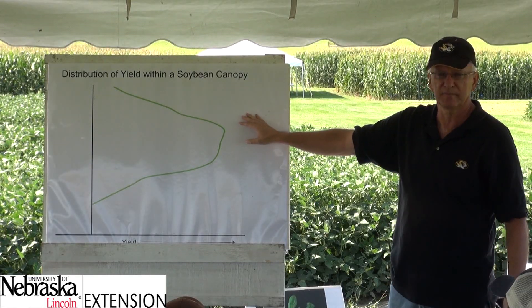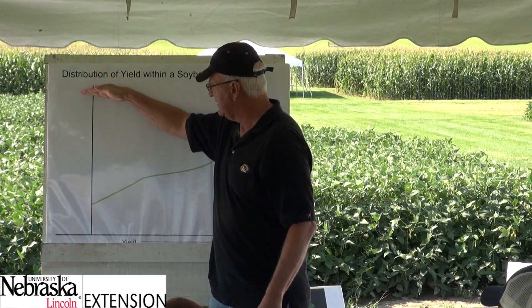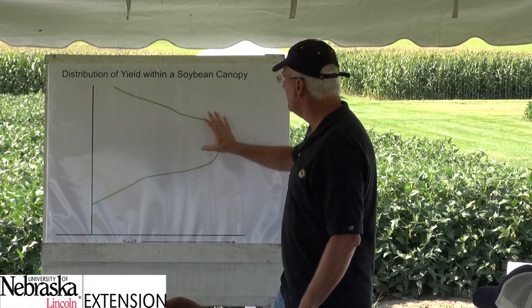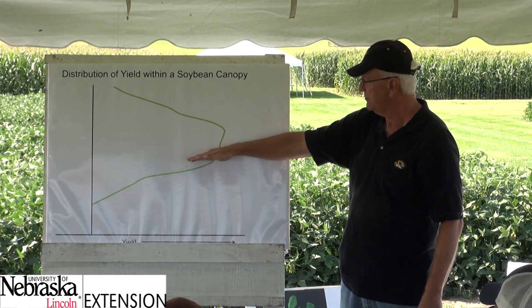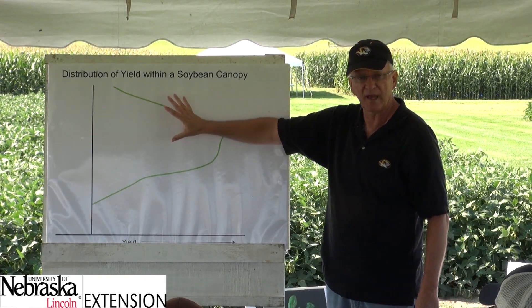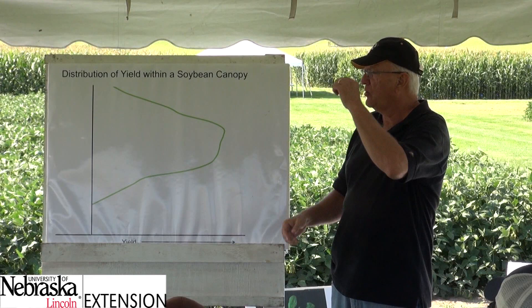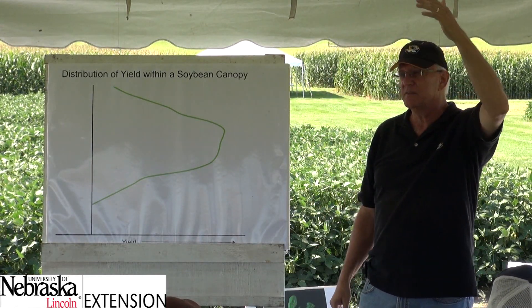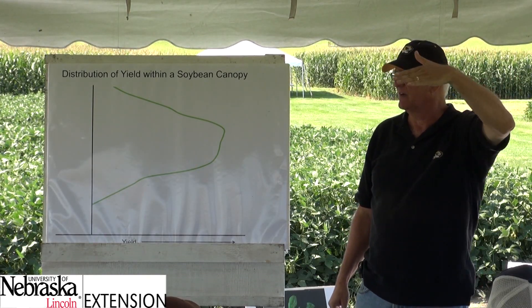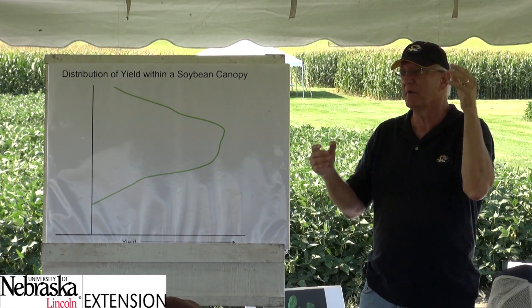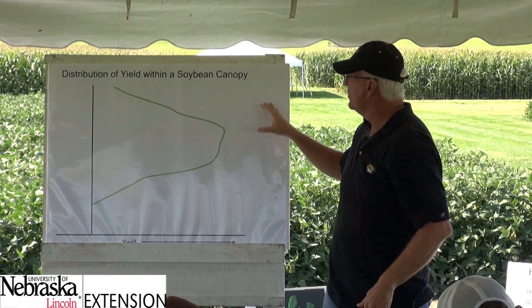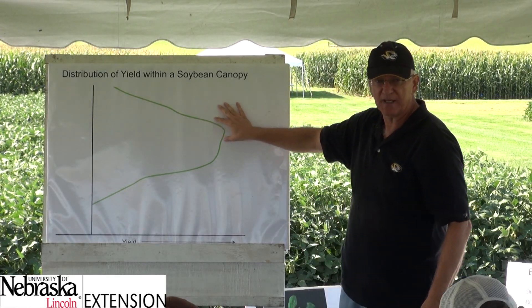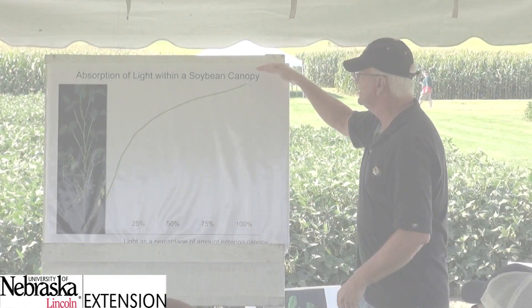This is the yield distribution within a canopy. Yield is increasing toward me, and this axis is just height on the plant. Most of the yield is in the bottom part of the top third and the top part of the middle third — that's where the yield is. In corn you think about the leaves maybe five or six above it feeding that ear, but in soybean it's pretty much the leaf at that node feeding the pods at that node. So you need to protect those leaves in the upper canopy.